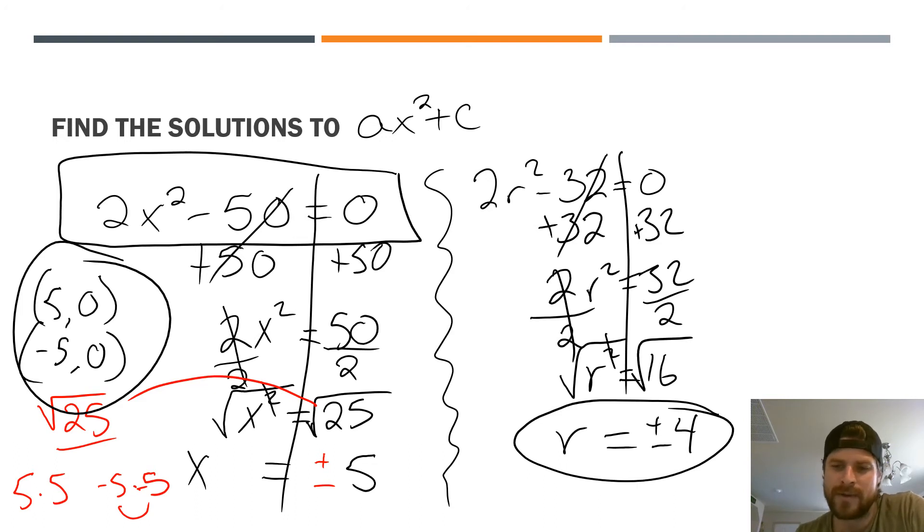Now what this tells us, if we want to write it down as coordinates or ordered pairs, we have a 4, 0 point and a negative 4, 0 point for this parabola. Those are the two parts that the parabola would cross the x-axis. Remember that's where our zeros, or in other words, our solutions are found.